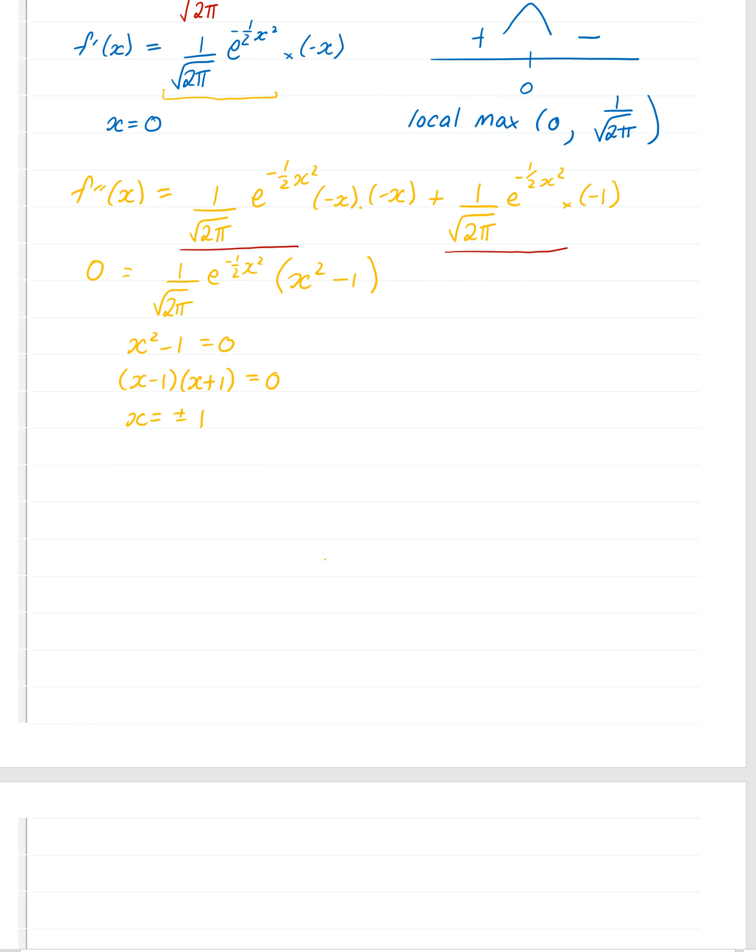We can work out our sign diagram just to help us to find out when it's concave and convex. So we've got minus 1 here. We've got plus 1 here. Pick a number. That's minus, less than minus 1, so minus 10. That'll be positive minus 10 squared is positive in between 0. So that's positive. 0 squared, take 1 is negative and positive again. So we've got that it's convex, concave, and then convex again.